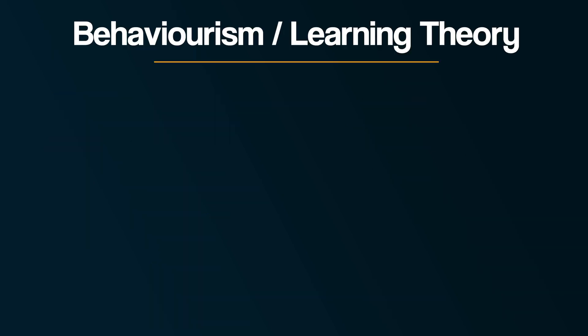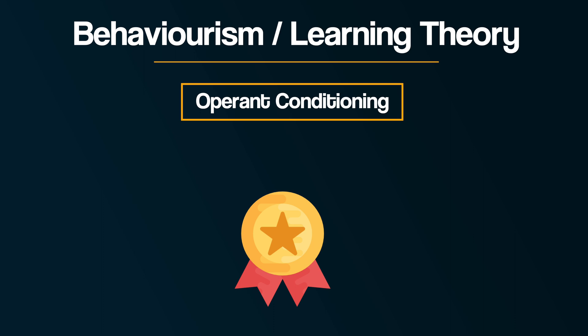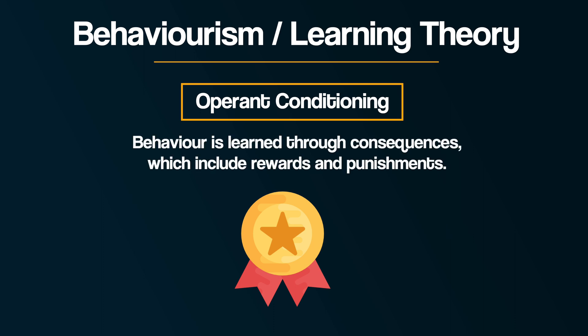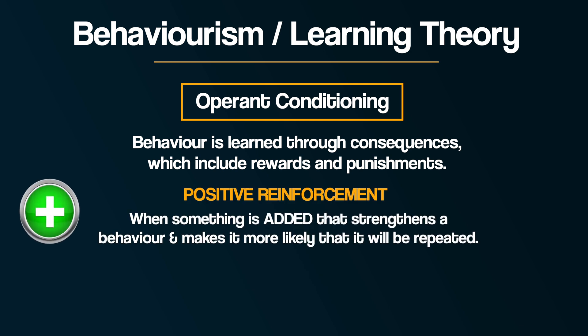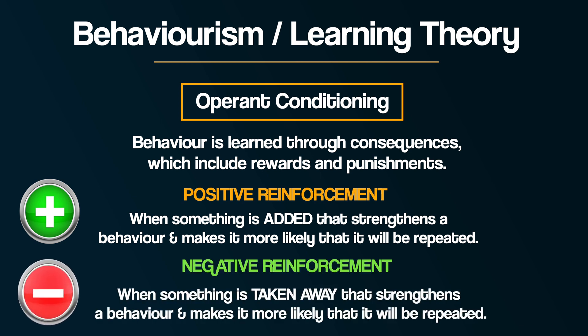In addition to classical conditioning is operant conditioning. This is the idea that behaviour is learned through consequences, which include rewards and punishments. Positive reinforcement is when something is added that strengthens a behaviour and makes it more likely to be repeated. Negative reinforcement is when something is taken away that strengthens a behaviour and makes it more likely to be repeated. Remember that only punishment weakens a behaviour — both positive and negative reinforcement strengthen a behaviour.